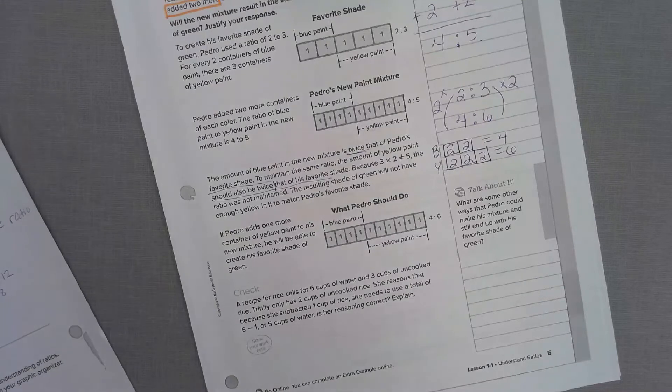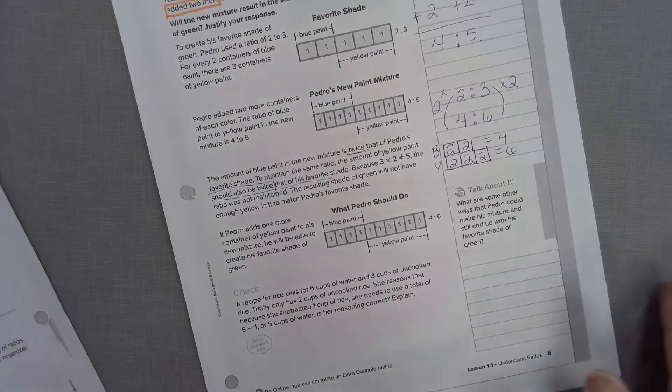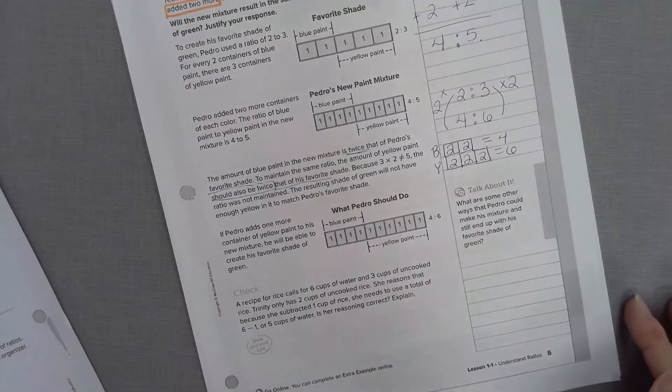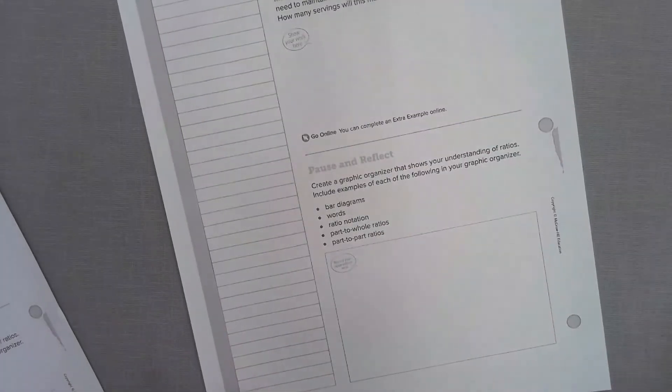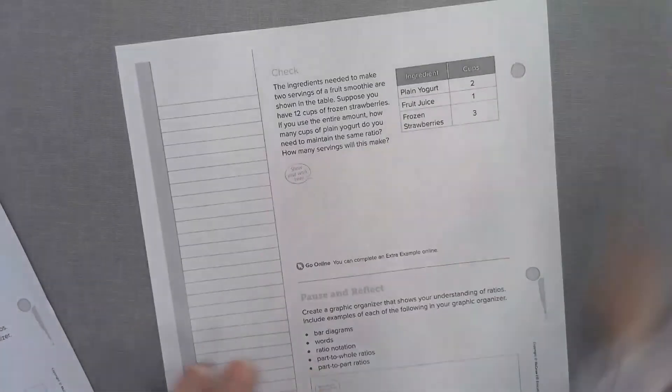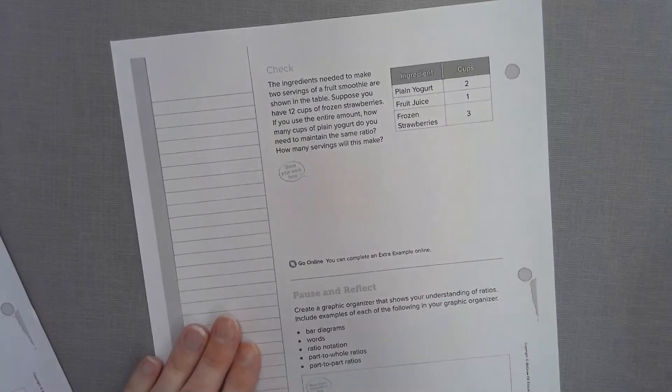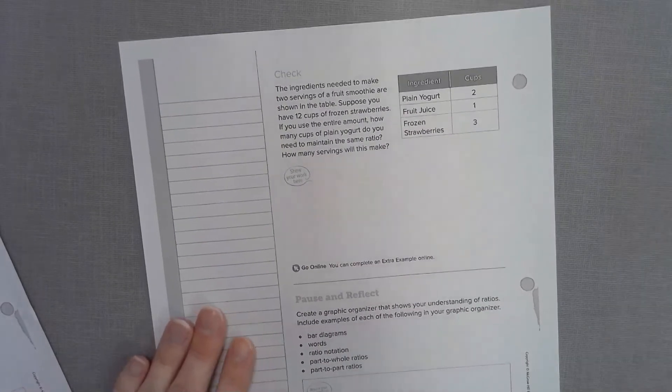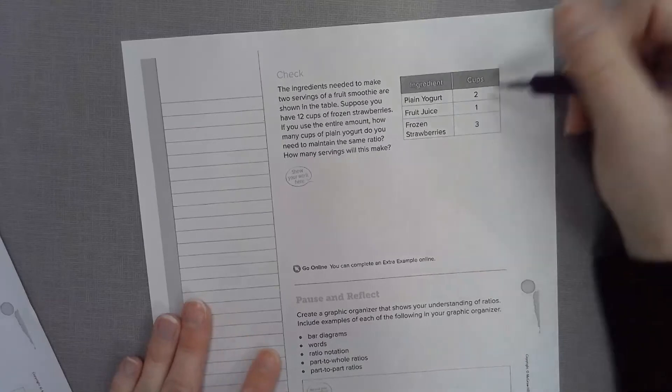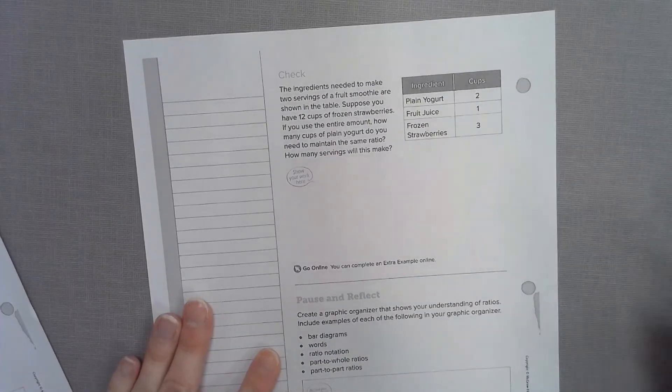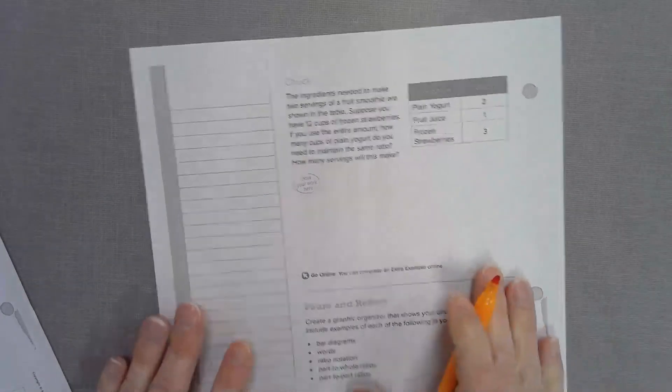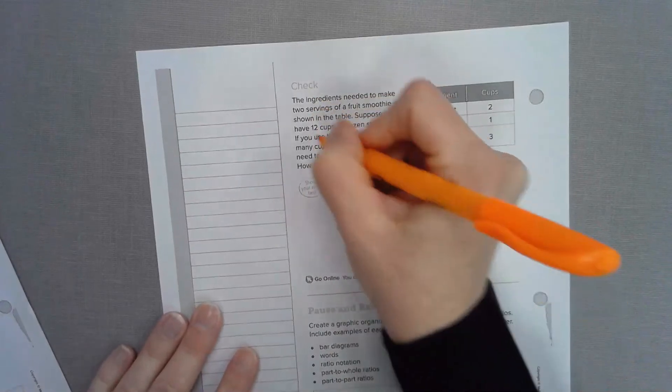We're going to now jump all the way to page 10. We're going to do the check for understanding. The ingredients needed to make 2 servings of a fruit smoothie are shown in the table below. Suppose you have 12 cups of frozen strawberries. It's important information. Let's highlight it.